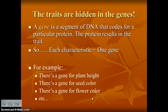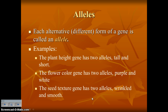Now into the genetics: a gene is a segment of DNA that codes for a particular protein, and the protein results in the trait. Each characteristic — pod color, seed color, hair color, eye color, skin color — is controlled by one gene. But each characteristic has multiple forms. The different forms of a gene are called alleles. You get genes from both your mother and your father — your father might give the allele for blue eyes, your mother the allele for brown eyes, both on the gene for eye color.